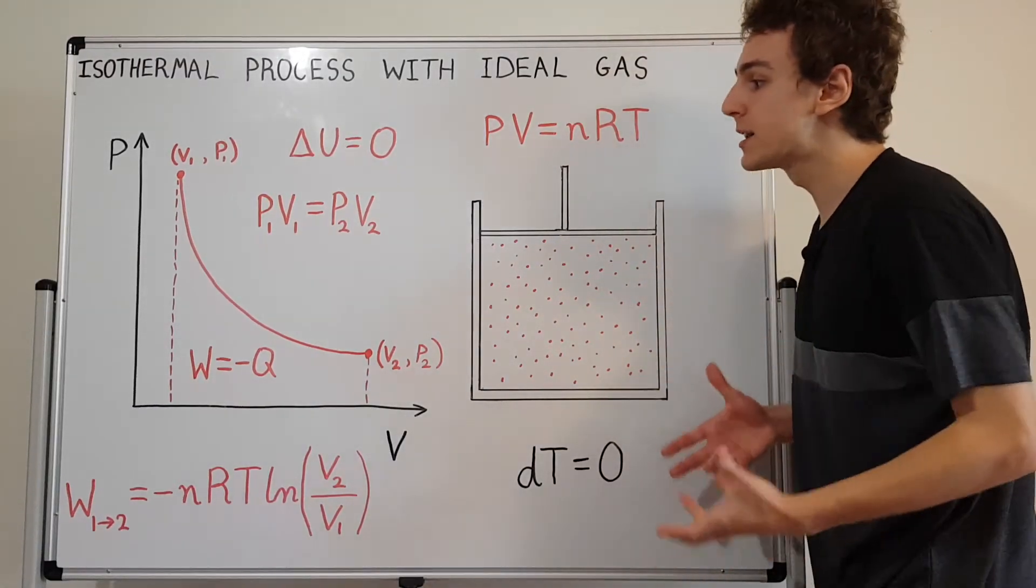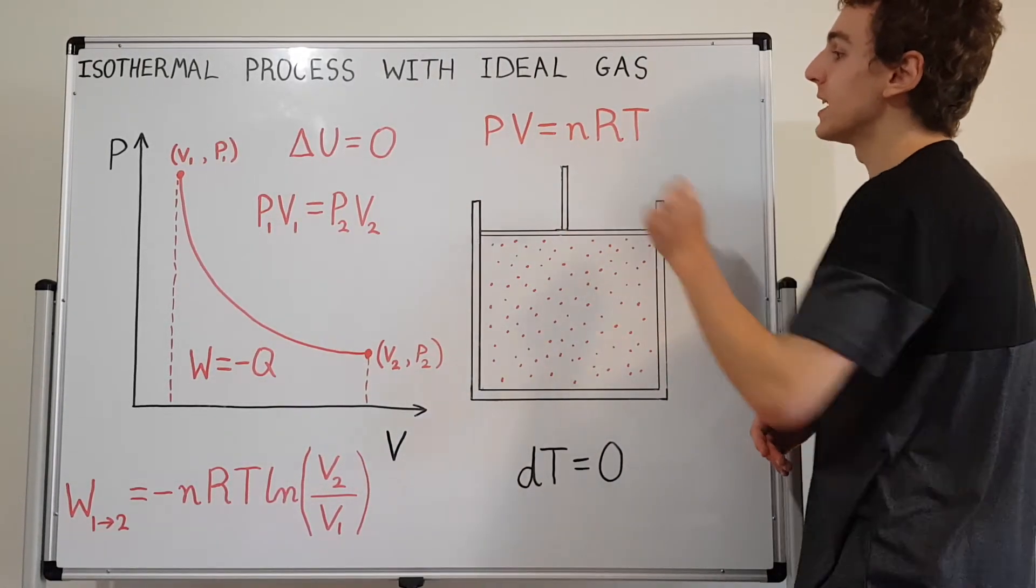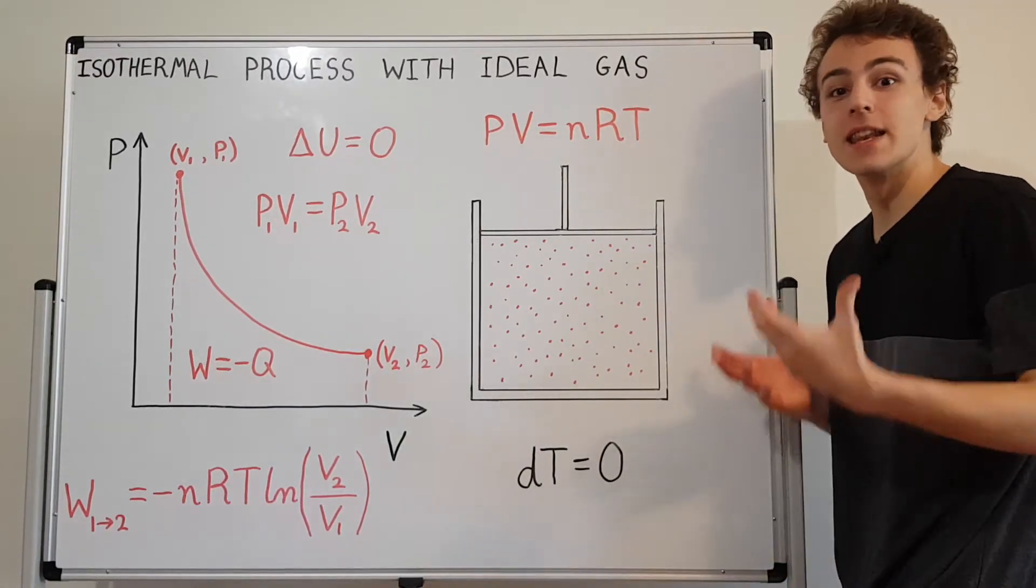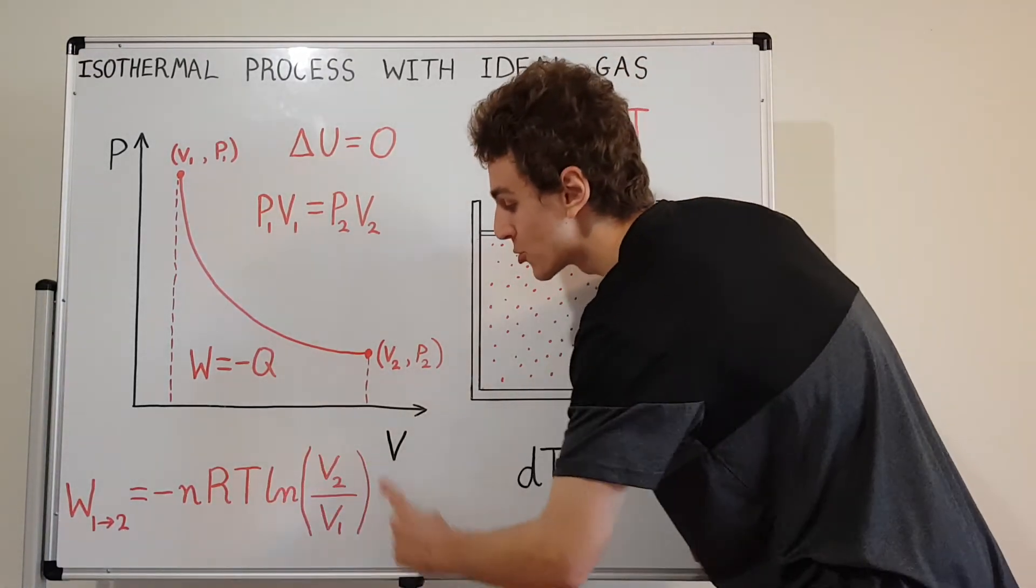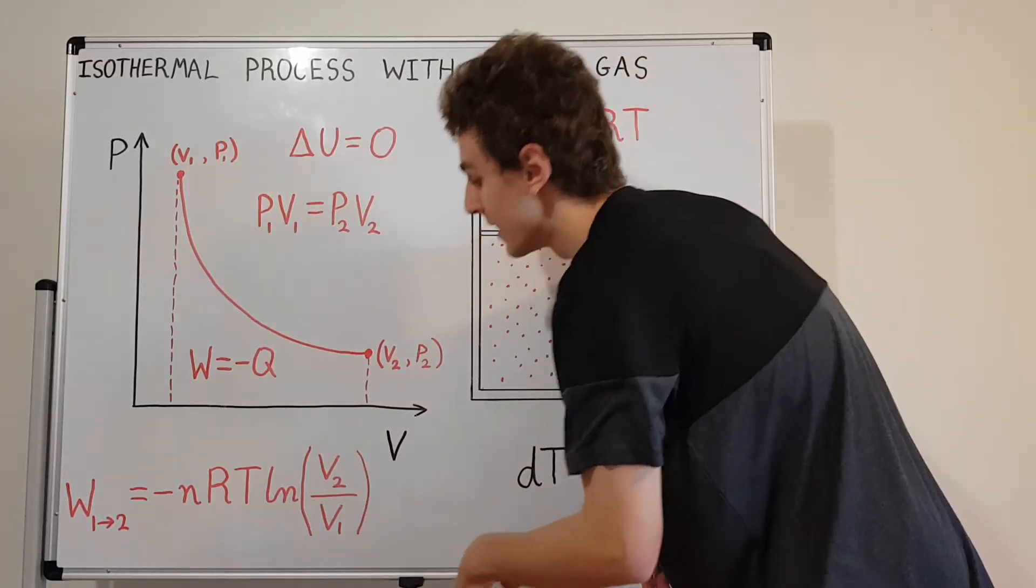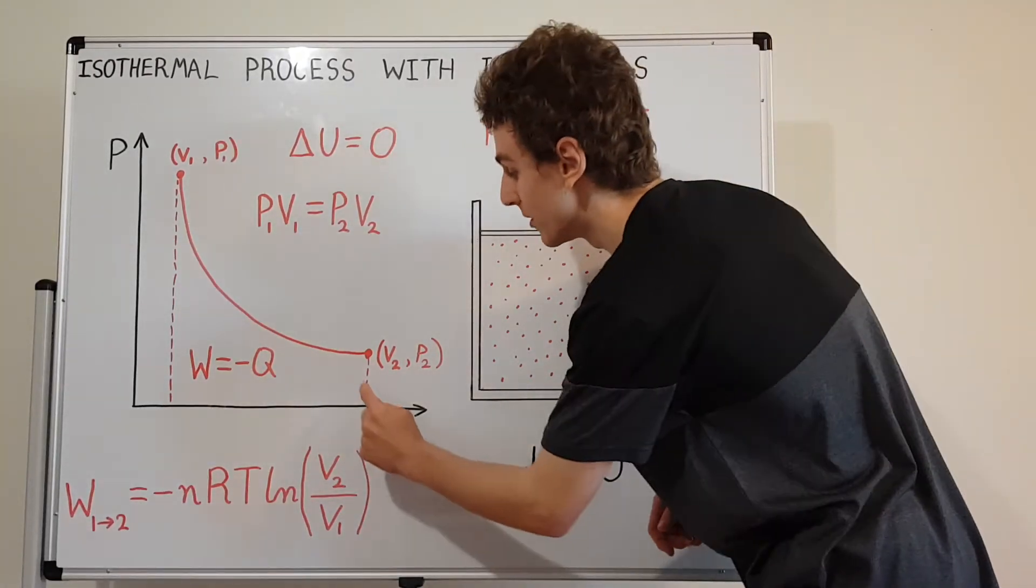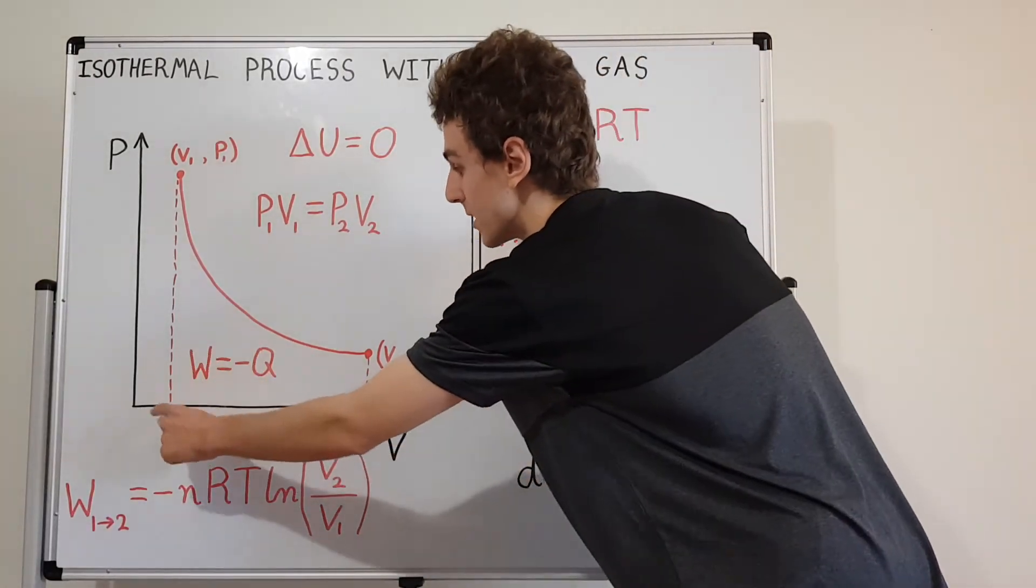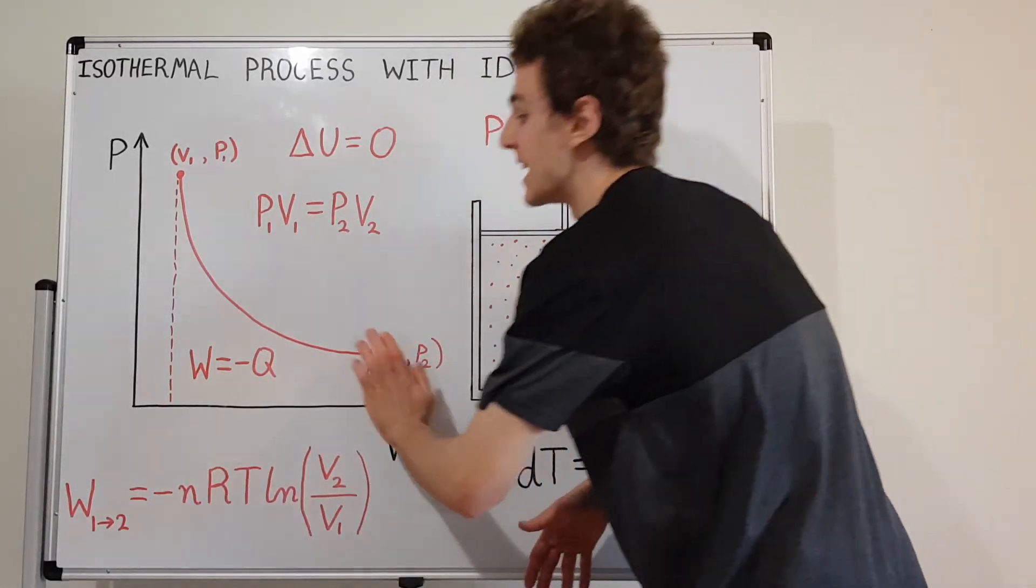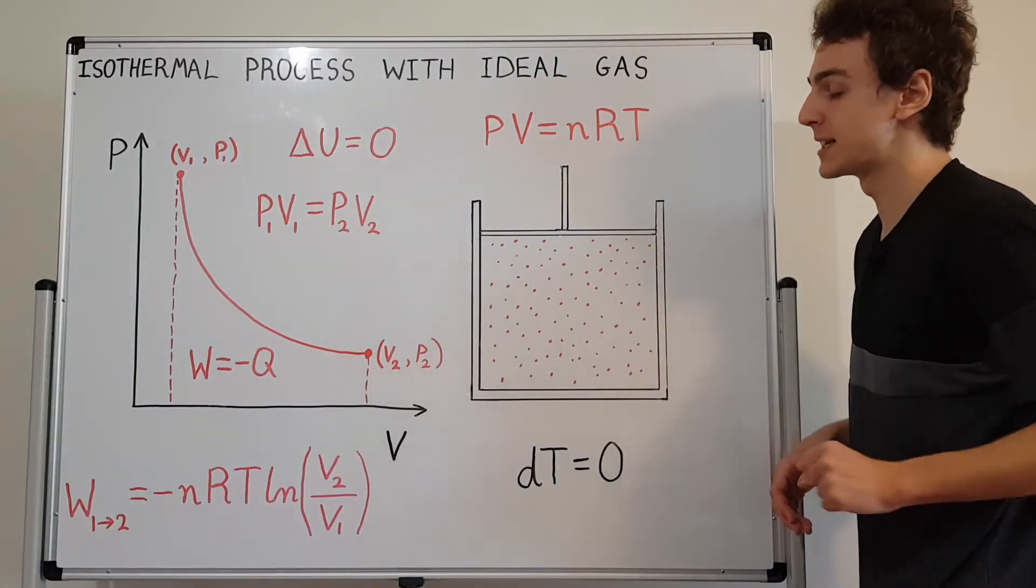And what would the work done in isothermal expansion be? Well, as we said before, we had a 1 on v function. And what's the integral of 1 on v? Well, that's natural log. That's where this natural log comes from. And this ratio of v2 over v1, that comes from evaluating the bounds of the definite integral. So we're starting at v2, and then we're subtracting off v1. And why is this negative? Because the negative of the area under the curve, that's the work that we're interested in, if we're using this sign convention.